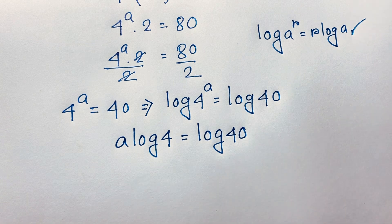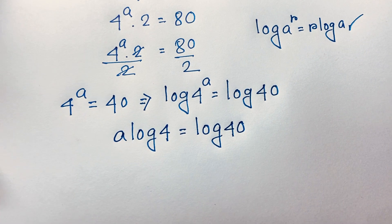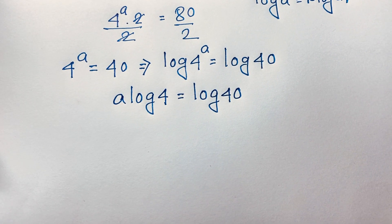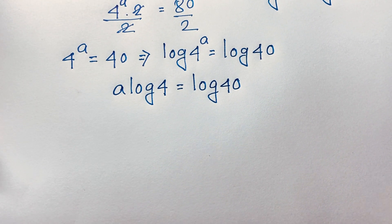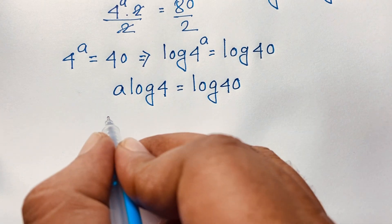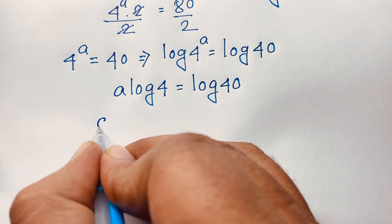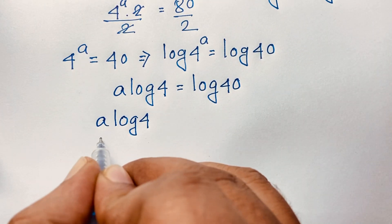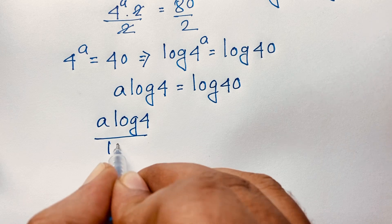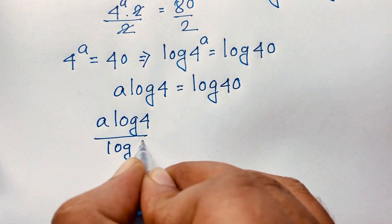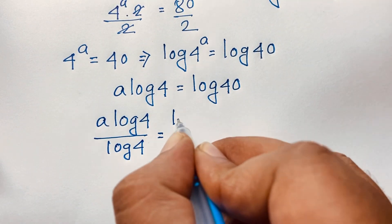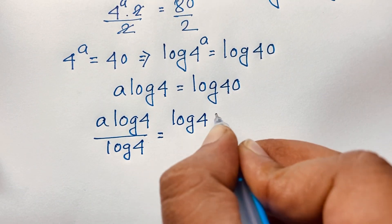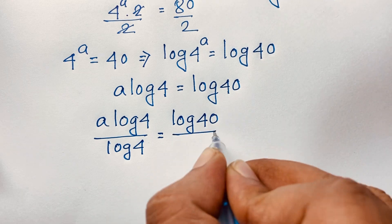Now, if I divide both sides by log 4, I can see easily this expression will be A times log 4 over log 4 is equal to log 40 divided by log 4.